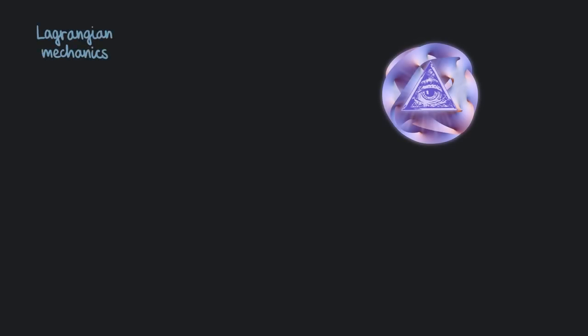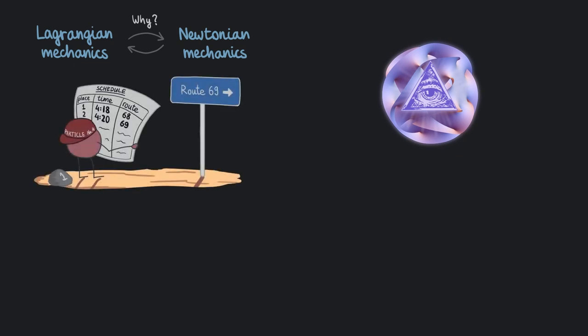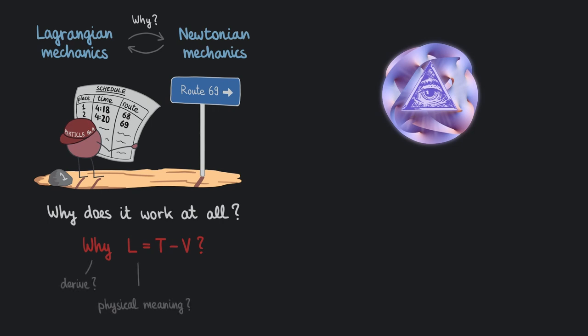When you are introduced to Lagrangian mechanics for the first time, there are a lot of questions that arise in your mind. Why is it equivalent to Newtonian mechanics? Do particles know where they are going before they start moving? Why does it work at all? We are going to focus on one slightly simpler issue: accepting the Lagrangian formulation of classical mechanics as a given, is there a deep reason or a physical explanation of why the Lagrangian has the form it has — kinetic energy minus potential energy? Can we actually derive this formula, and does it have a physical meaning, or is it just a mathematical tool we use to derive the laws of motion?